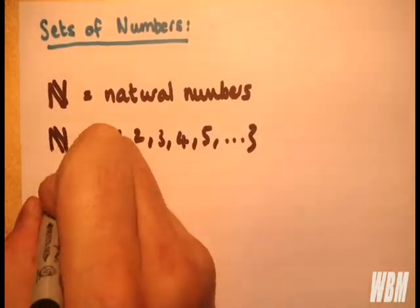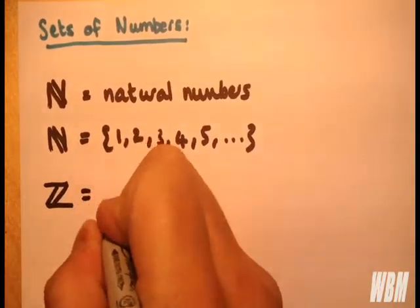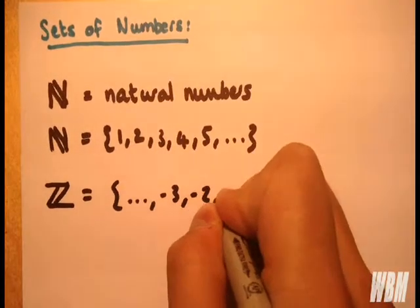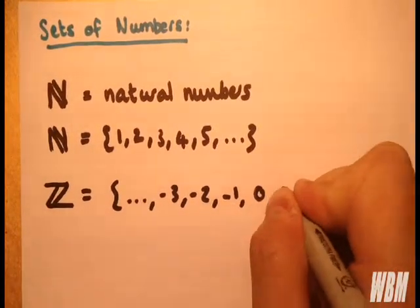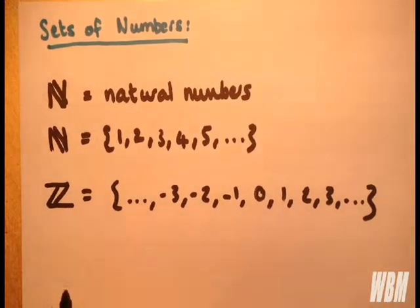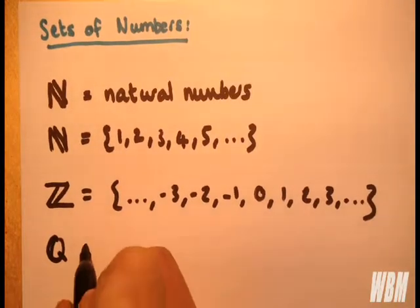So we can have integers: -3, -2, -1, 0, 1, 2, 3, etc. We can have, the last one I'll do is rational numbers.